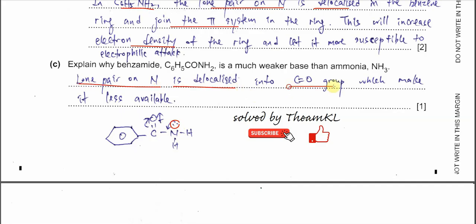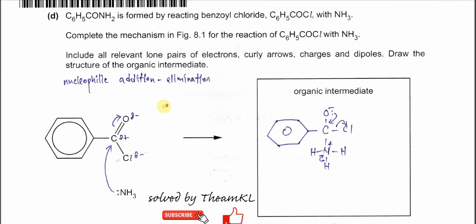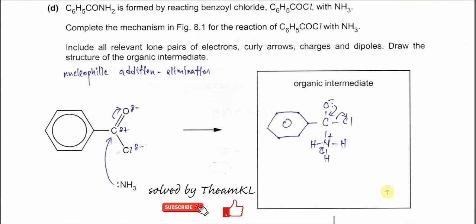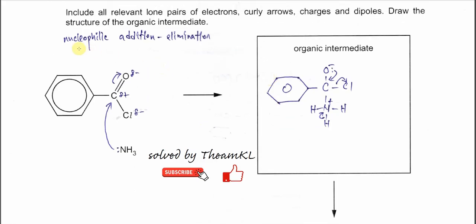Part D: Benzamide is formed by reacting benzoyl chloride with ammonia. You need to complete the mechanism, which is nucleophilic addition-elimination — the nucleophile attacks first, then something is eliminated, which in this case is the chloride. Include all lone pairs, curly arrows, charges, and dipoles.